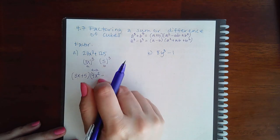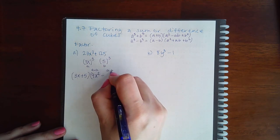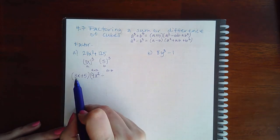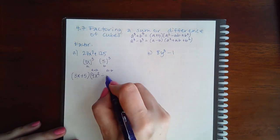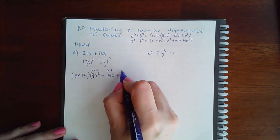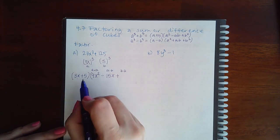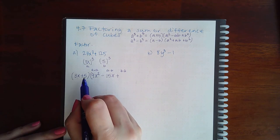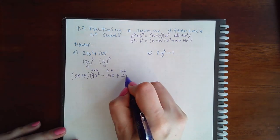And then the sign is a minus, and then it's a times b. So what do I get if I do 3x times 5? That would be 15x. And then plus b squared, which is the same as b times b. So what would I get if I did 5 times 5? That would be 25.